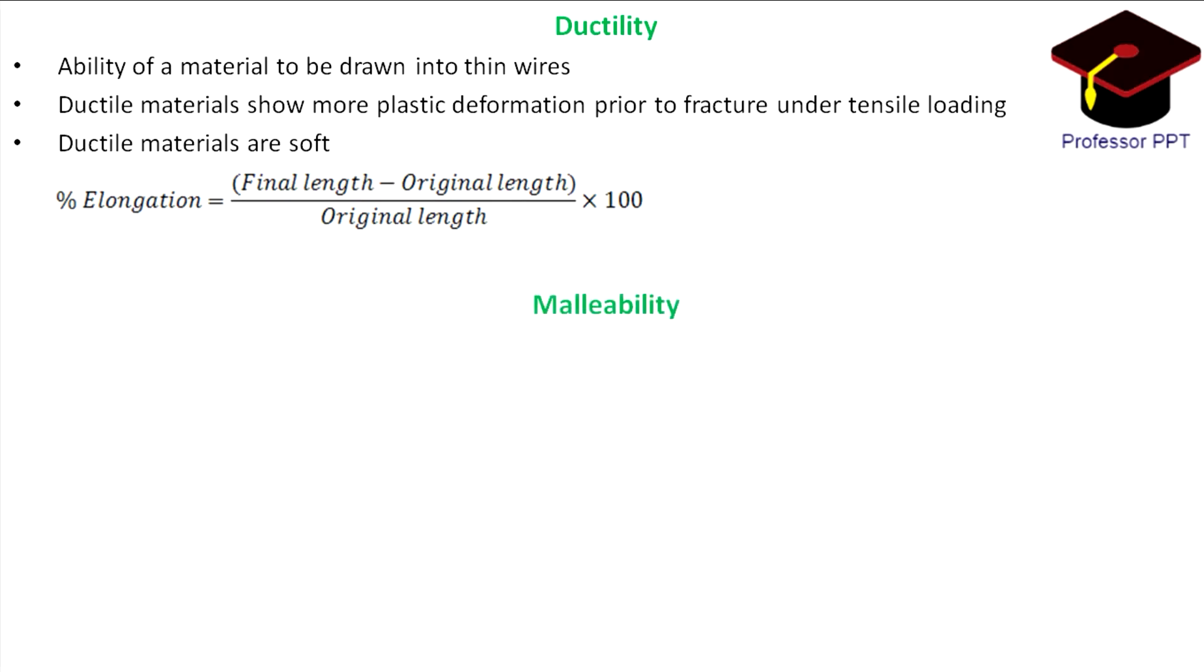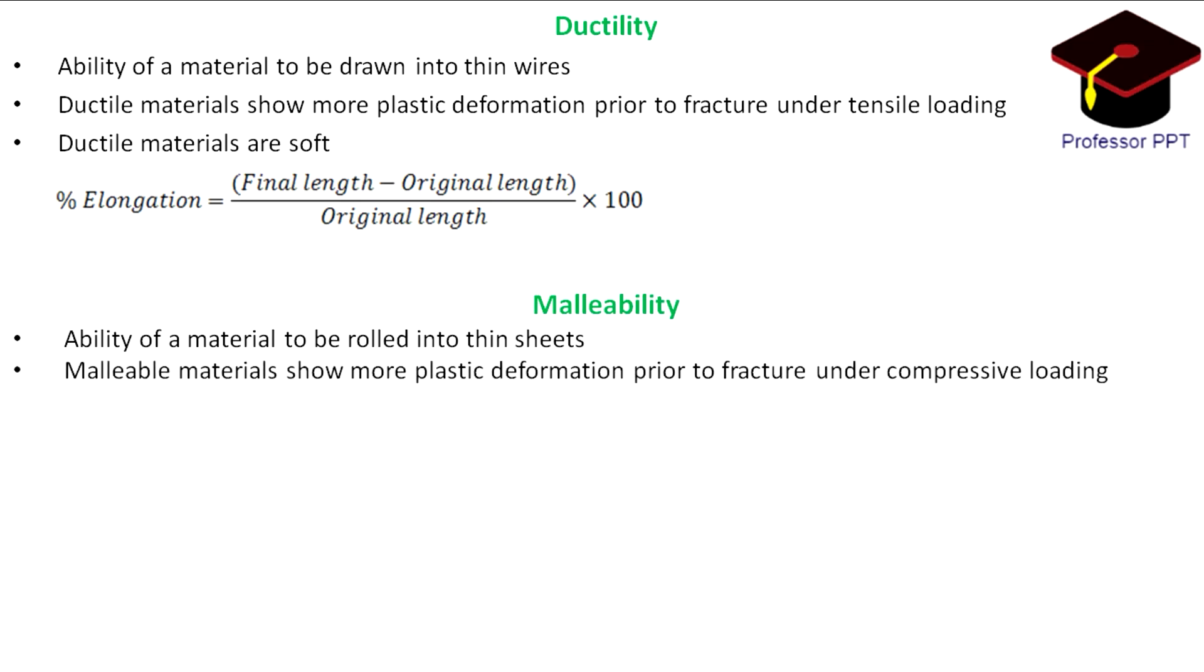Malleability: It is the ability of a material to be rolled into thin sheets. Malleable materials show more plastic deformation prior to fracture under compressive loading conditions.